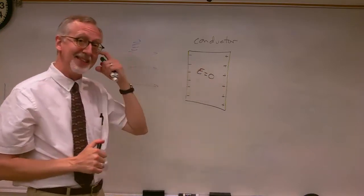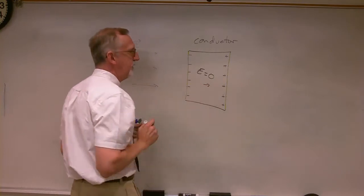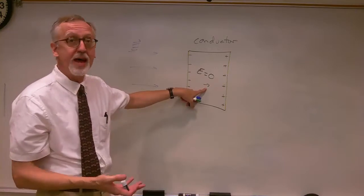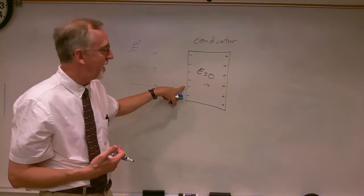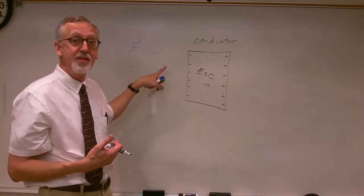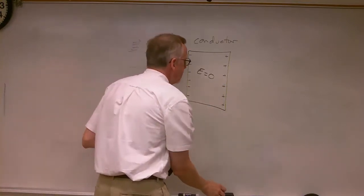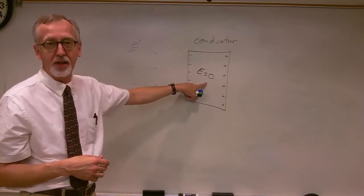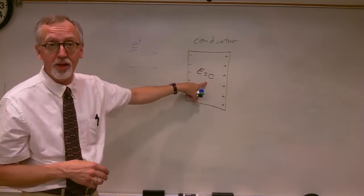How do we know these fields must exactly cancel? If there was some residual electric field inside the conductor, electrons would experience a force and move, increasing the charge separation, creating more opposing field, and canceling it further. So there is no electric field inside the conductor, or there would be charges moving around inside it. As soon as the charges stop moving, we know there must be no electric field inside.